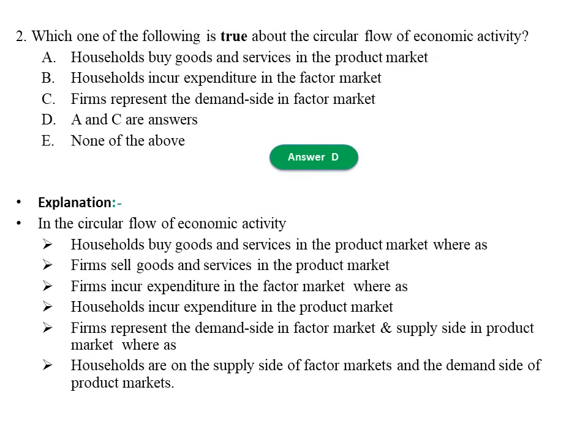Explanation: In the circular flow of economic activity, households buy goods and services in the product market whereas firms sell goods and services in the product market. Firms incur expenditure in the factor market whereas households incur expenditure in the product market. Firms represent the demand side in the factor market and supply side in the product market, whereas households are on the supply side in the factor market and demand side in the product market.